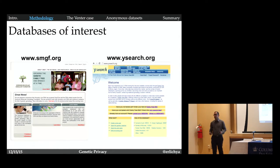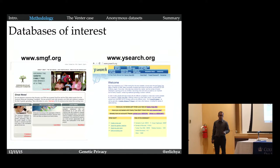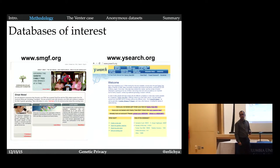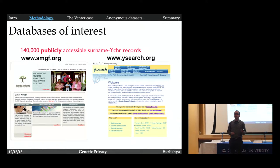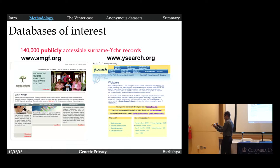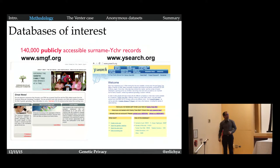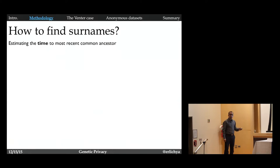We decided to focus on two databases, smgf.org and ysearch.org. Both databases are publicly available online and they contain the records of 140,000 individuals. So we have surnames and the Y chromosome combination.